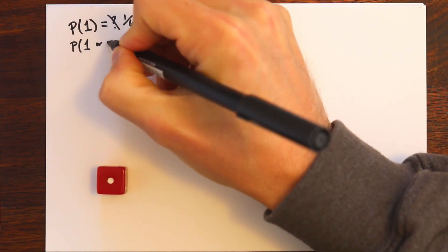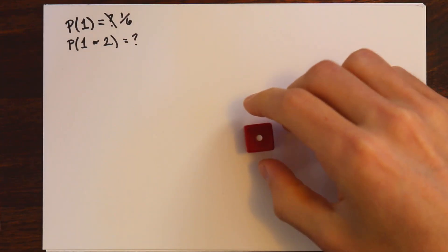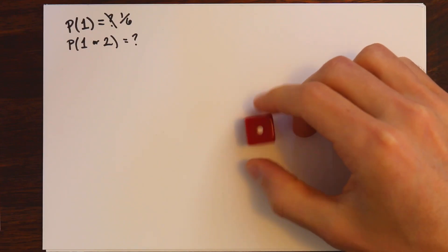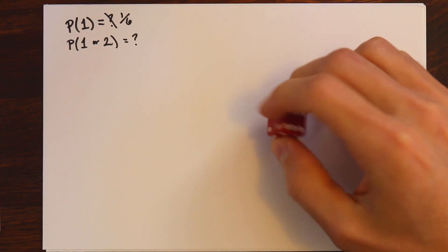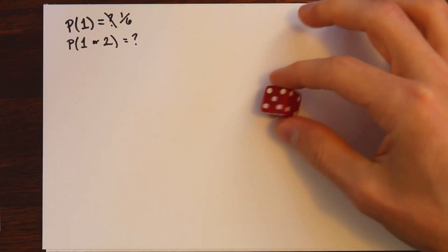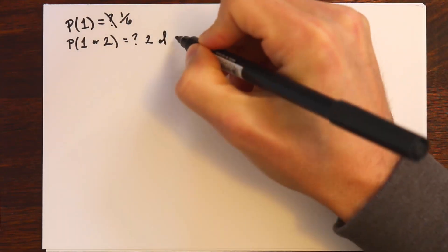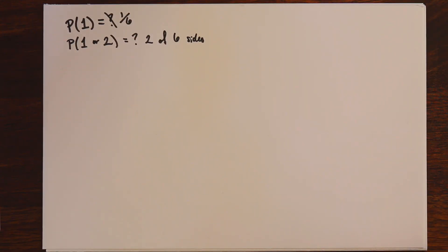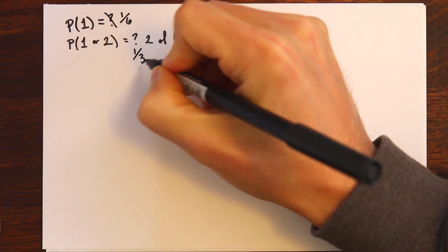We might also think, what's the probability of getting a 1 or a 2? We can go through the reasoning: one of the sides has a 1, we have a side that has a 2, a 3, a 4, a 5, and a 6. So 2 of our 6 sides has a 1 or a 2. Since each of these sides is equally likely, we have a 1 third chance of rolling a 1 or a 2.